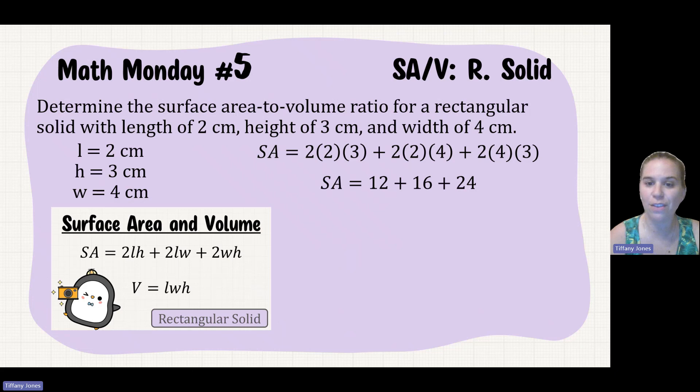So if we solve this out, that would give us 12 plus 16 plus 24, which gives us 52 for our surface area.